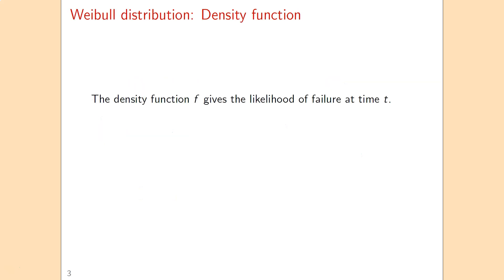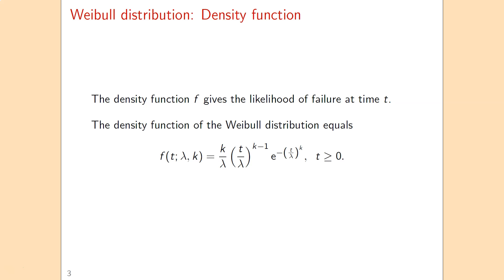The density function gives you the likelihood of failure at a certain time t. For the Weibull distribution, the density function is given by a formula that depends on the parameter values lambda and k. If we plug in a value for t, then you get the likelihood that the machine fails at that moment in time, reaching that specific age.